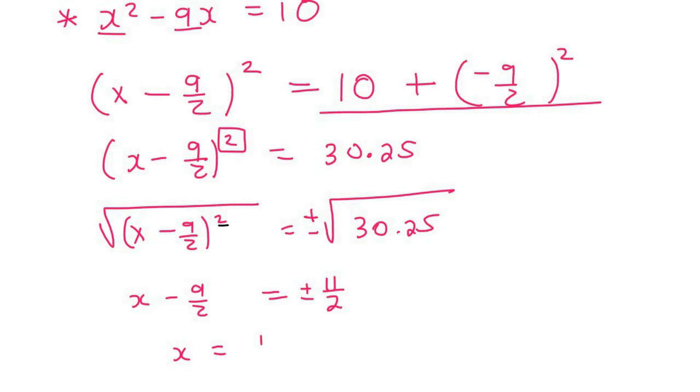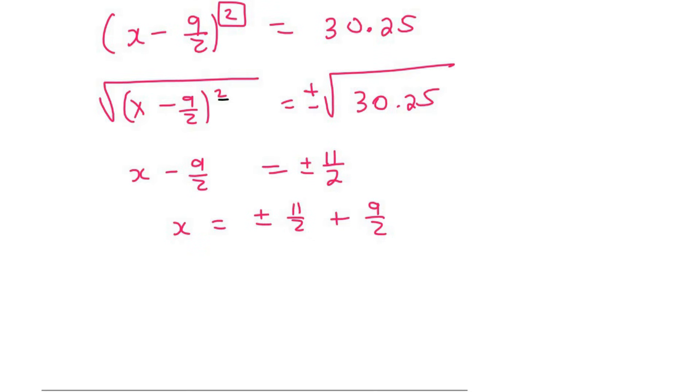Then you can get x alone by saying plus minus 11 over 2 plus 9 over 2. Now we can go ahead and get our two answers. So for our first one I'm going to keep this as a positive so that's going to be 11 over 2 plus 9 over 2 and that's going to eventually give you 10. Or you could say x is going to be the negative option which is going to be minus 11 over 2 plus 9 over 2 and that's going to give us negative 1. And so our two answers are going to be x is equal to 10 or x is equal to negative 1.